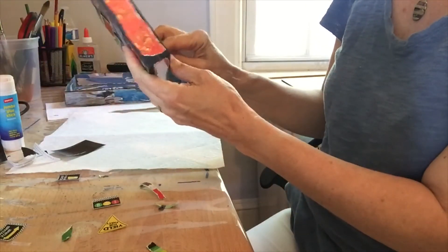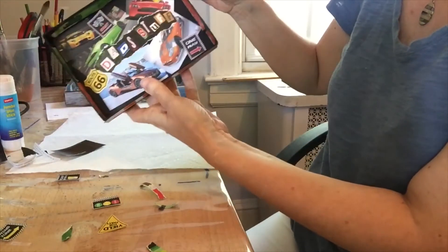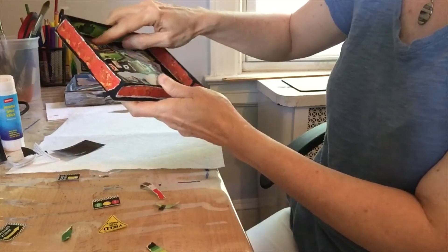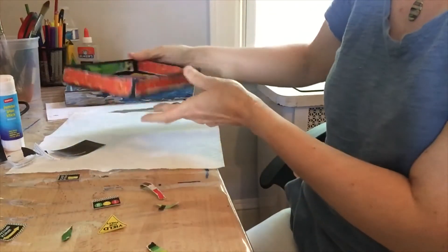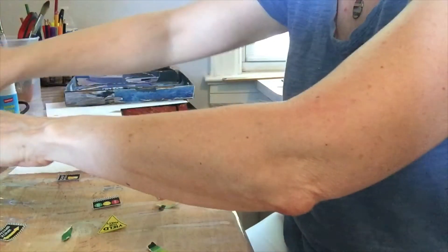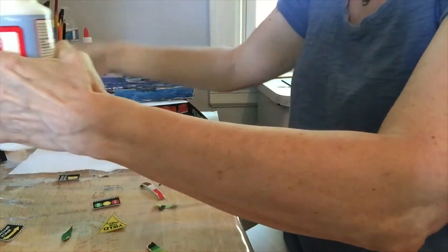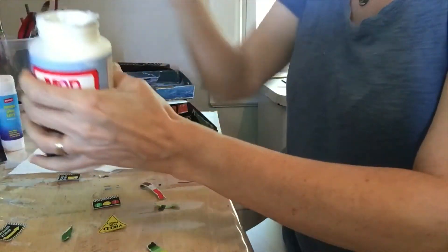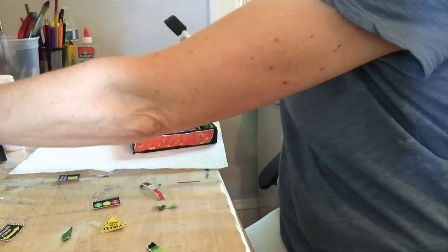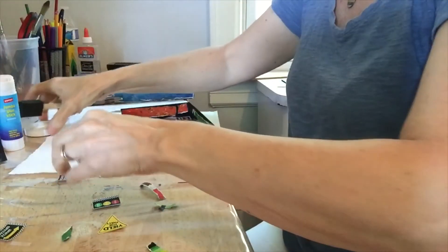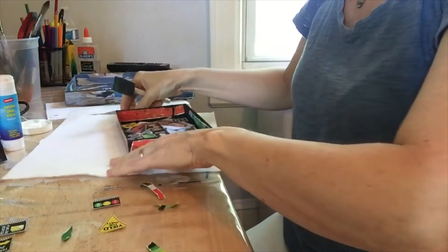And now what we have to do, because this is not really sealed, we're going to use Mod Podge. Here we go with Mod Podge and one of these sponge brushes. Now put down paper towel or something on your table because this makes a mess.